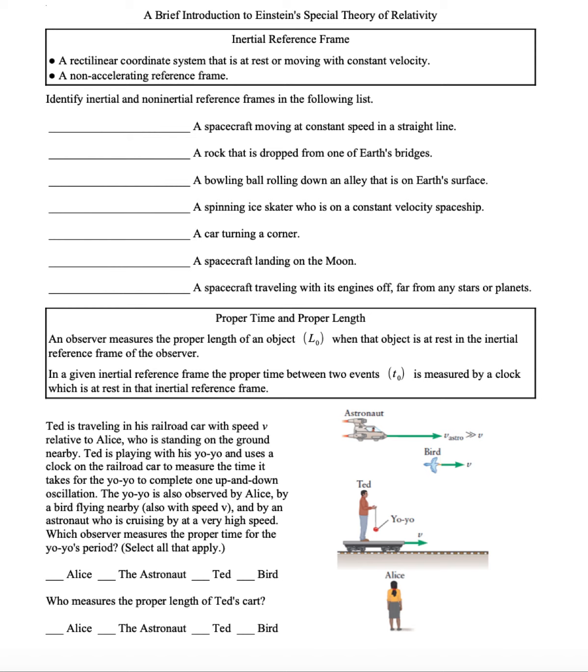Let's identify inertial and non-inertial reference frames in the list. You can try it for yourself if you like. Then I'll give my answers. Okay, so a spacecraft moving at constant speed in a straight line. That would be considered inertial.